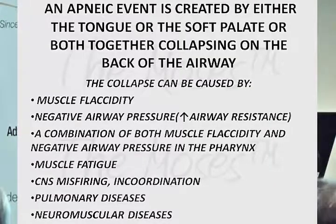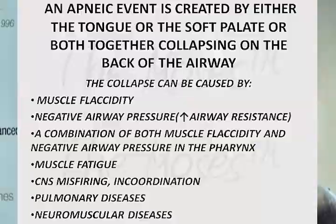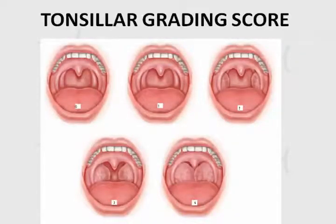An apneic event is created by two things: muscle flaccidity, negative pressure, or a combination of both. We have muscle fatigue, central nervous system misfiring and incoordination, pulmonary diseases, and neuromuscular diseases. The tonsillar grading score — when you see a grade 4, those are called kissing tonsils. Getting tonsils and adenoids out in children is not that difficult. In mature adults it's harder because the tonsils are very close to the carotid artery — tonsillectomy is painful, bloody, and has a higher mortality rate.